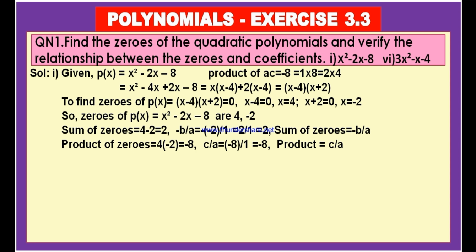We know that the sum of the zeros is minus B by A and the product of the zeros is equal to C by A. We found the zeros and calculated the sum and product. We also applied the formulas and got the same values. Therefore, we verified both relationships between the zeros and the coefficients A, B, C of the quadratic polynomial in the form Ax squared plus Bx plus C.